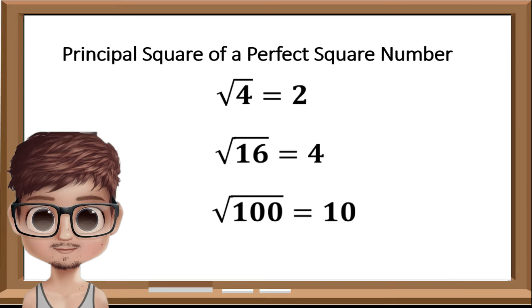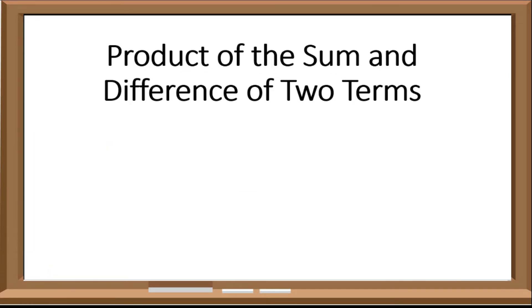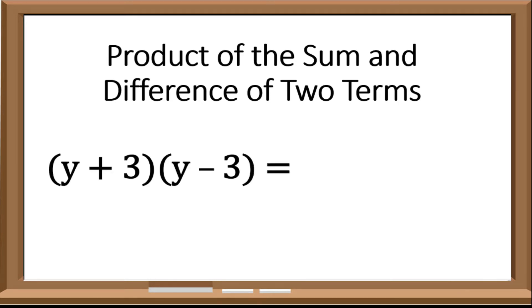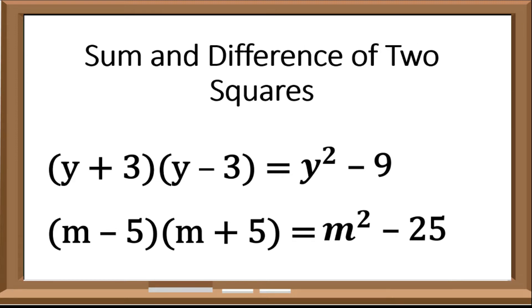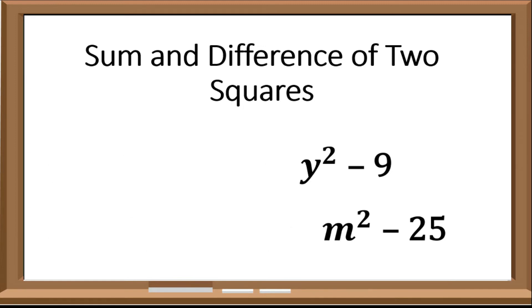For the prerequisite of product of the sum and difference of 2 terms: the product of (y + 3) and (y − 3) is y² − 9. For (m − 5) and (m + 5), that would be m² − 25. In factoring difference of 2 squares, the product of sum and difference of 2 terms is the given expression, and we need to find its factors.